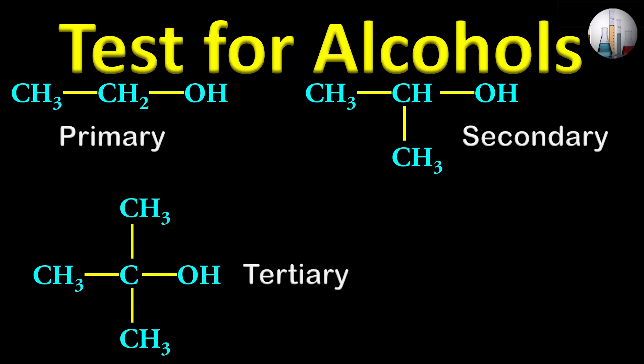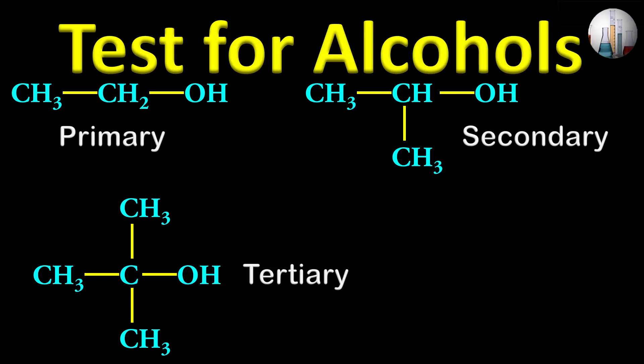If the alpha carbon is primary, then the alcohol is called primary. If the alpha carbon is secondary, then the alcohol is termed as secondary alcohol. And if it is tertiary, then the alcohol is called tertiary.